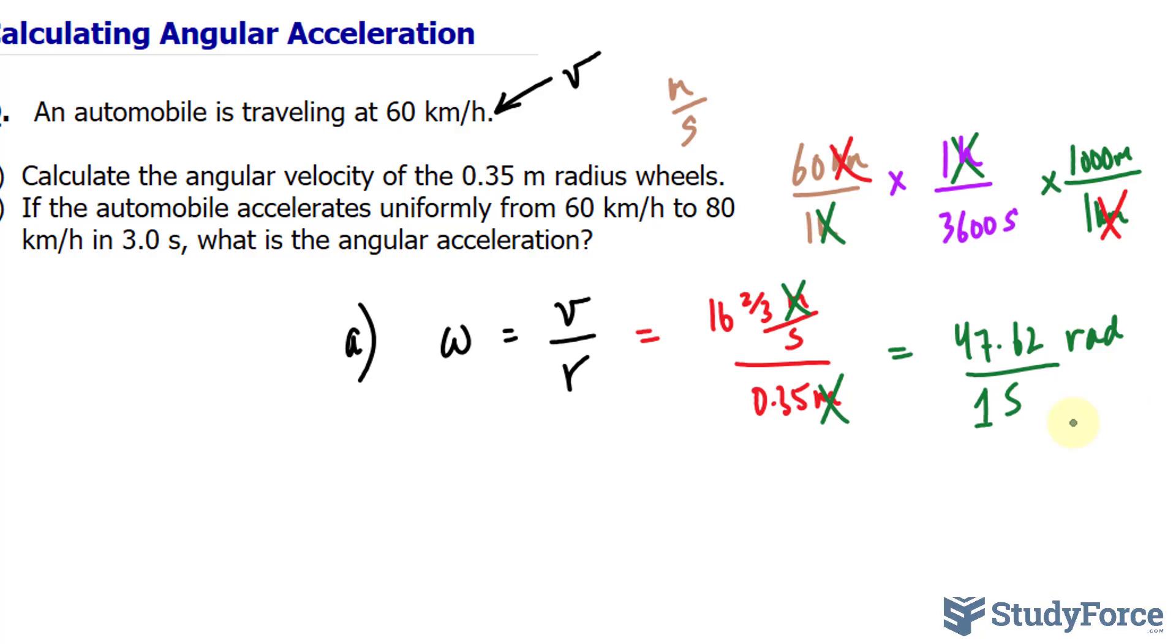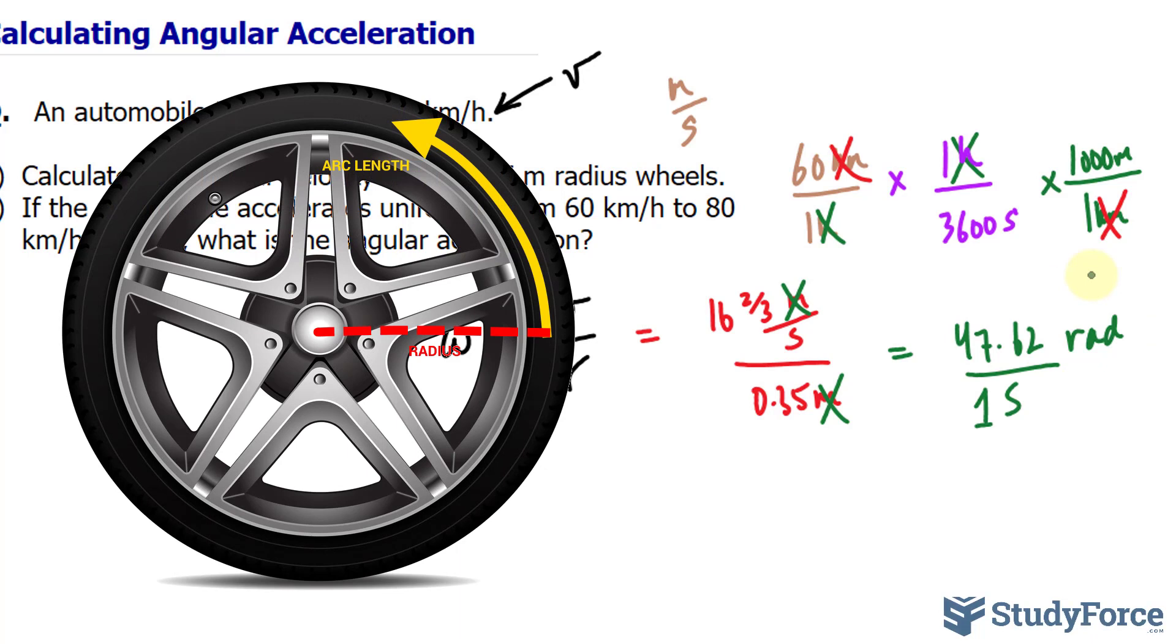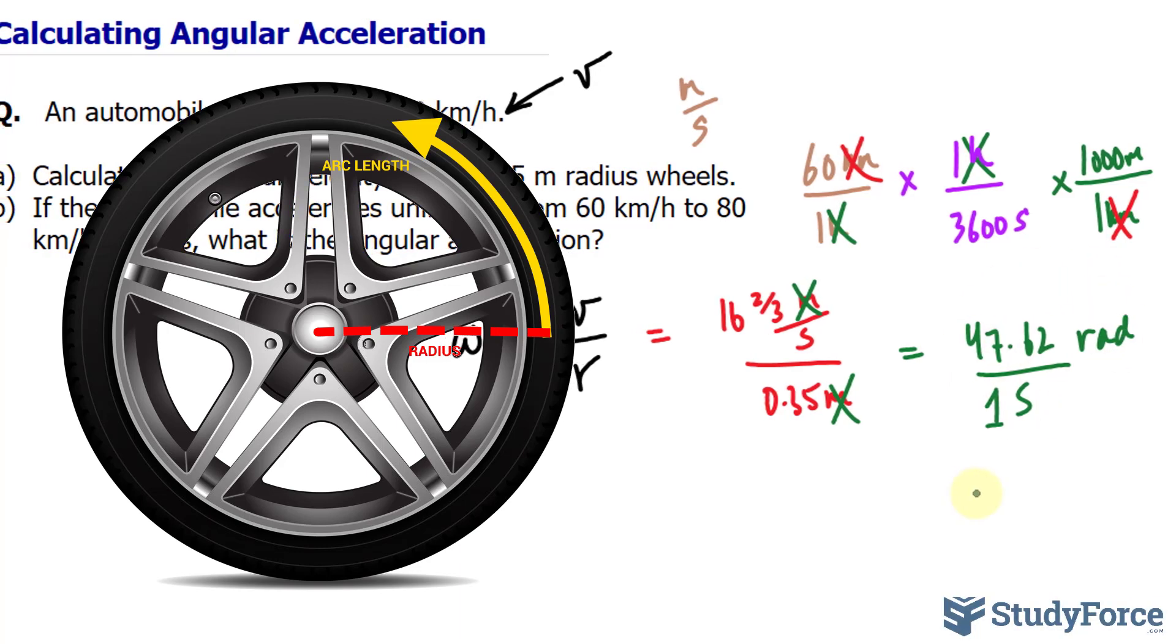Another way you can represent angular velocity is by writing down radians per 1 second. It's really up to you. In fact, by representing it as radians per 1 second, it actually gives the reader more understanding of what this means. Remember what radians is. It's the arc length divided by the radius of a circle. So when the reader reads this, it sort of gives it a clearer meaning.